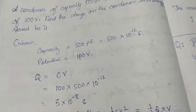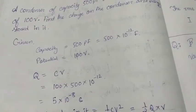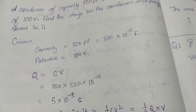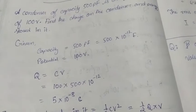So I multiply 5 into 10 to the power minus 8 Coulomb. And this is the charge that is on the condenser. It is equal to 5 into 10 to the power minus 8 Coulomb.